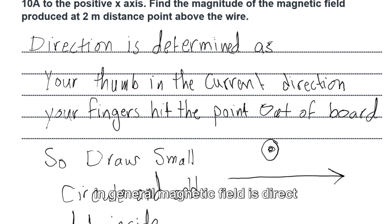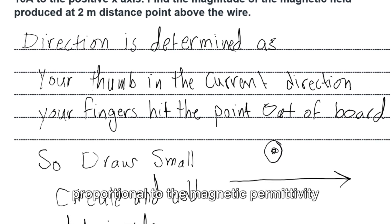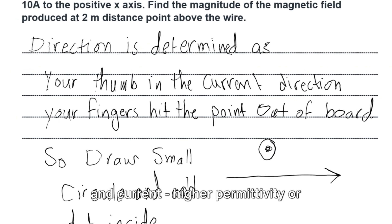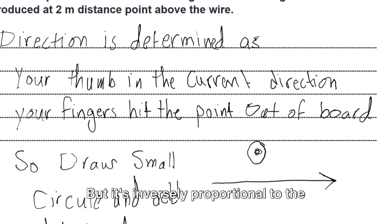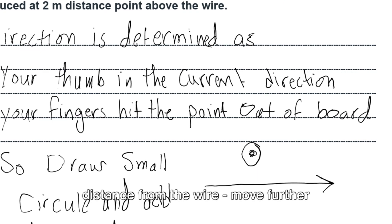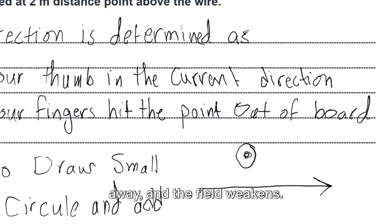In general, magnetic field is directly proportional to the magnetic permittivity and current. Higher permittivity or current, stronger the field. But it's inversely proportional to the distance from the wire. Move further away, and the field weakens.